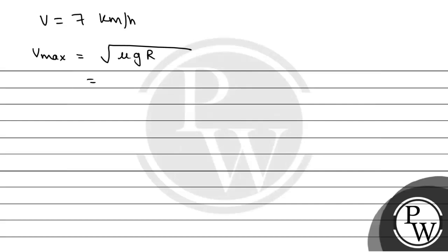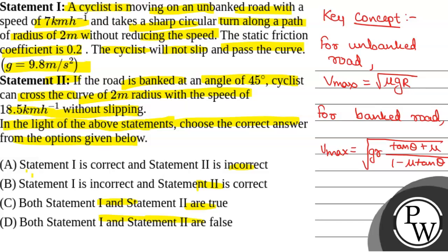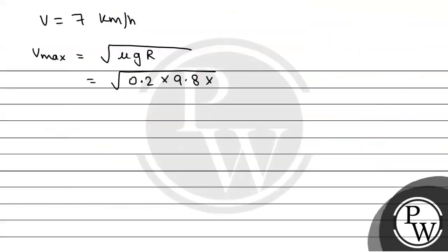Now, mu is the coefficient of friction that is given as 0.2, g is the acceleration due to gravity that is given as 9.8, and r is the radius of path that is given as 2 meters. So this will be equal to, on solving, 1.97 meters per second.